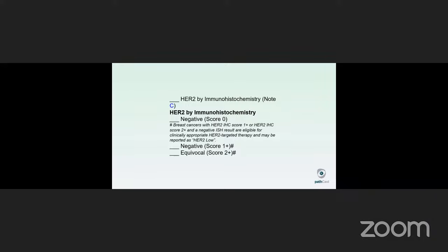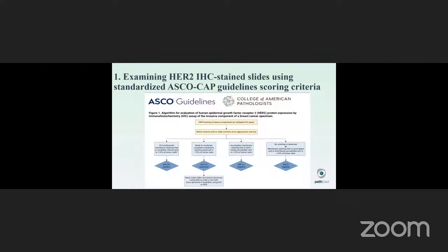Similarly, a few days prior to this publication, the updated CAP synoptic biomarker templates issued a footnote acknowledging the HER2-low entity by stating breast cancers with HER2-IHC 1+, or HER2-IHC 2+, and a negative ISH result, are eligible for clinically appropriate HER2-targeted therapy and may be reported as HER2-low. Going back to the ASCO-CAP update, we will discuss now in detail the best practice updates for distinguishing zero from one-plus. First, examining HER2-IHC stained slides using standardized ASCO-CAP guideline scoring criteria. For this, we use the ASCO-CAP criteria as shown here in algorithm form as instituted in 2018 with no new changes to this scoring.